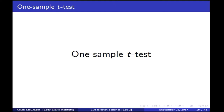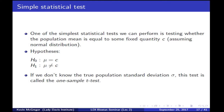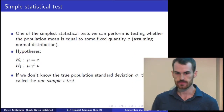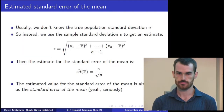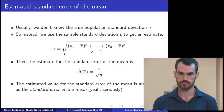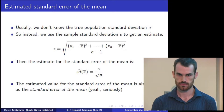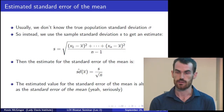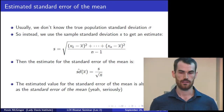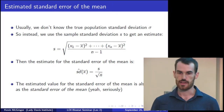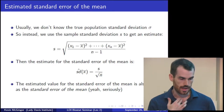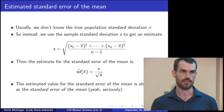Quick clarification from a participant: the standard error of the mean applies to means of independent experiments — it's not appropriate if observations within a sample are not independent. That's a good point: you have to assume all your observations are independent. You can't have observations from the same person, for instance, because they would be correlated. If observations are correlated, this quantity becomes more complicated to calculate.